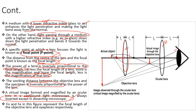In the diagram, F₀ represents the focal length of the objective lens and FE represents the focal length of the eyepiece. These values for the focal lengths of the objective lens and eyepiece are illustrated in the figure.